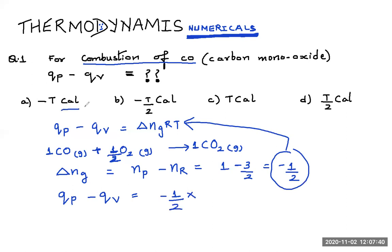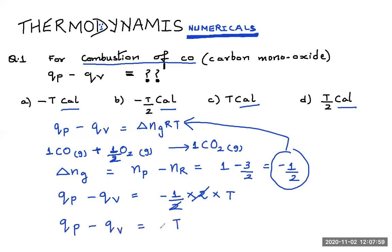Since all the options are in calorie, I am substituting the value of R as 2 calorie per mole. Temperature is not given, so after simplification we get Qp minus Qv equal to minus T calorie. That is the answer — option A. I hope this is clear to everyone.